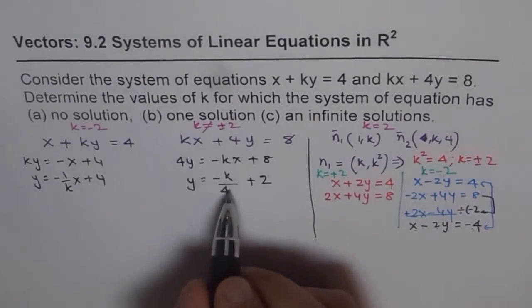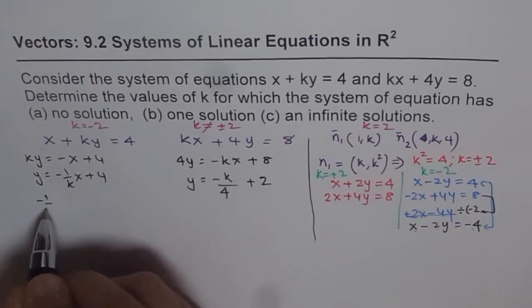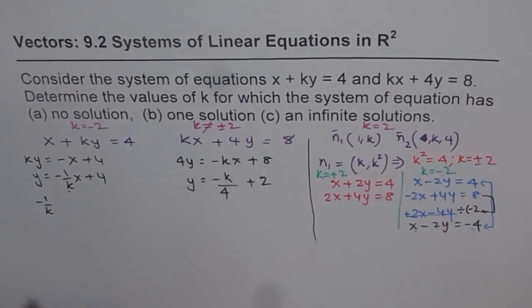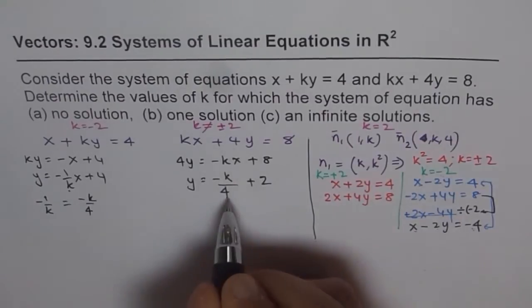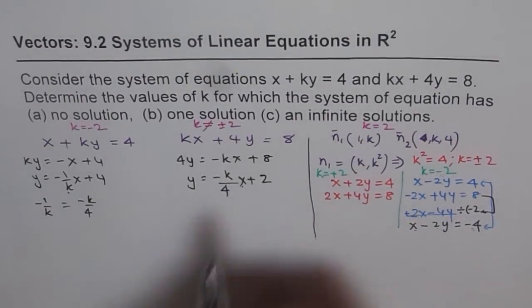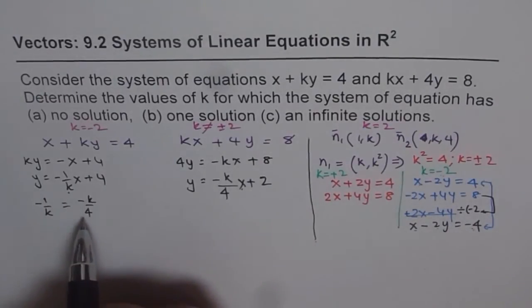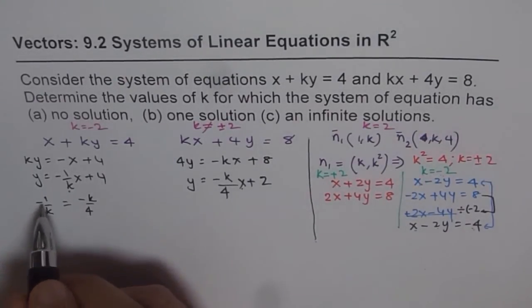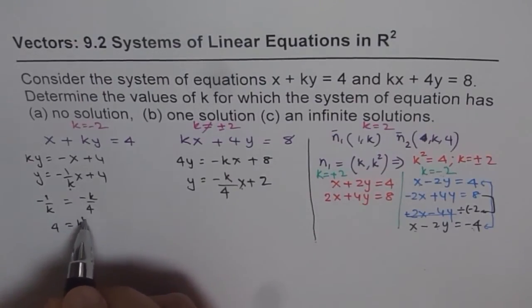For their slopes to be same, we have -1/k, that is the slope for the first equation, should equal -k/4, the slope for the second equation. Now we can cross-multiply and solve for k. If we cross-multiply, minus cancel out, you get 4 equals k².